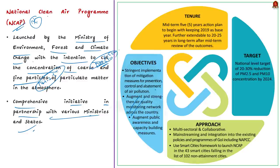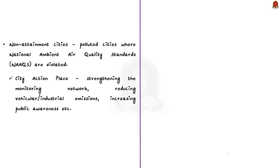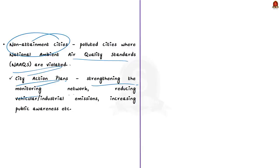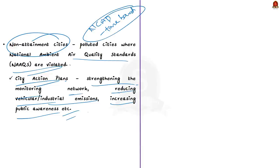The goal of NCAP is to meet the prescribed annual average ambient air quality standards at all locations in the country within a stipulated time frame. A tentative national level target was set: a 20% to 30% reduction of PM2.5 and PM10 concentration by the year 2024. For this purpose, the Central Pollution Control Board identified a list of polluted cities called non-attainment cities where national ambient air quality standards are violated, and city action plans have been framed — including measures for strengthening monitoring networks, reducing vehicular and industrial emissions, and increasing public awareness.